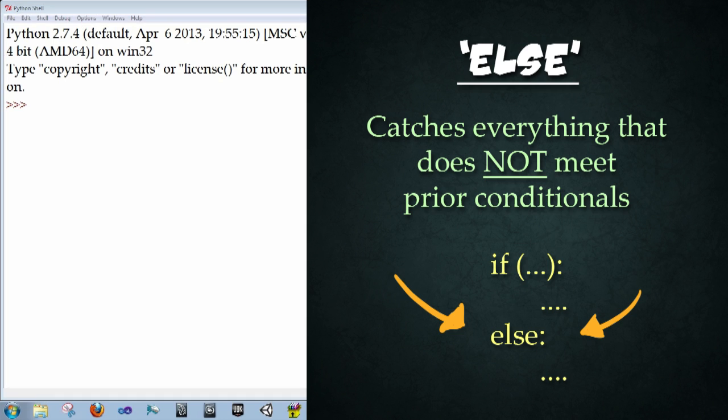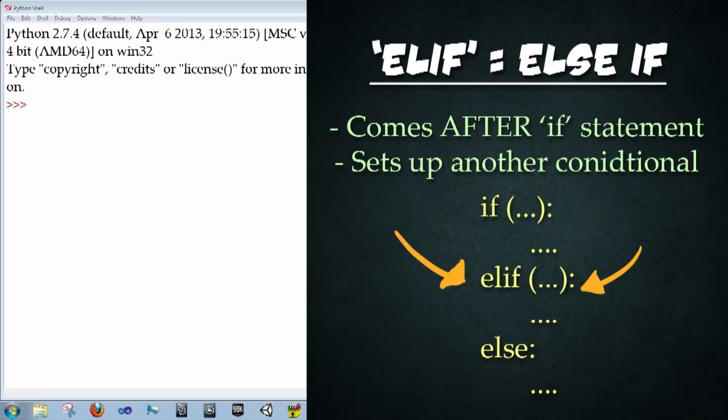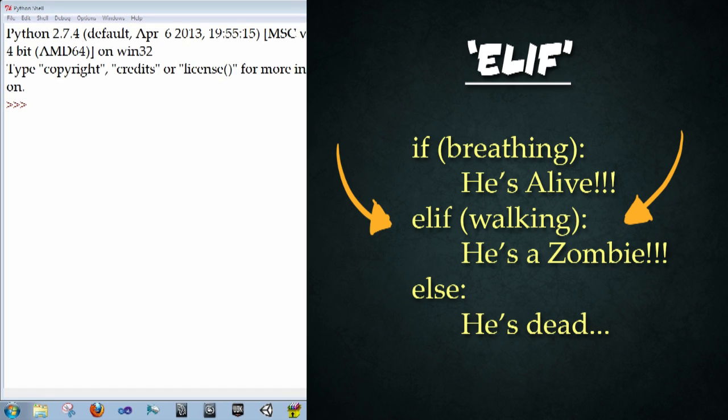The last conditional I have besides if and else is a combination of the two called else if, and it would fit right in between if and else. It's else if something, some other condition needs to be checked. For example, if I'm breathing, I'm alive. Else if I'm walking around, I'm a zombie.